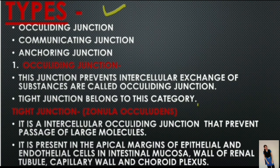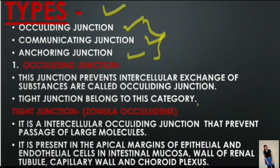Cell junctions are classified into three types: occluding junction, communicating junction, and anchoring junction.